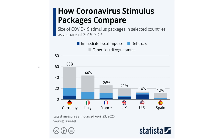Here we have an amazing chart about how the current stimulus packages compare — the size of stimulus packages in selected countries as a share of their previous year 2019 GDP. It breaks it down to three different policy styles in terms of stimulus and the US has chosen to do it a very different way to many other countries.